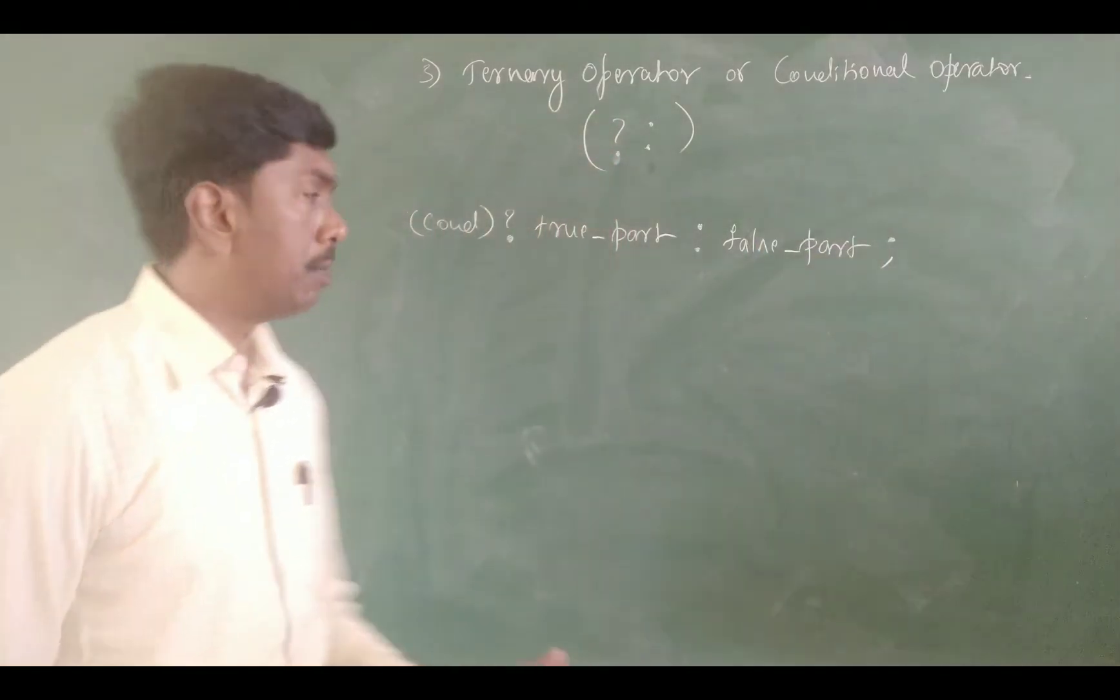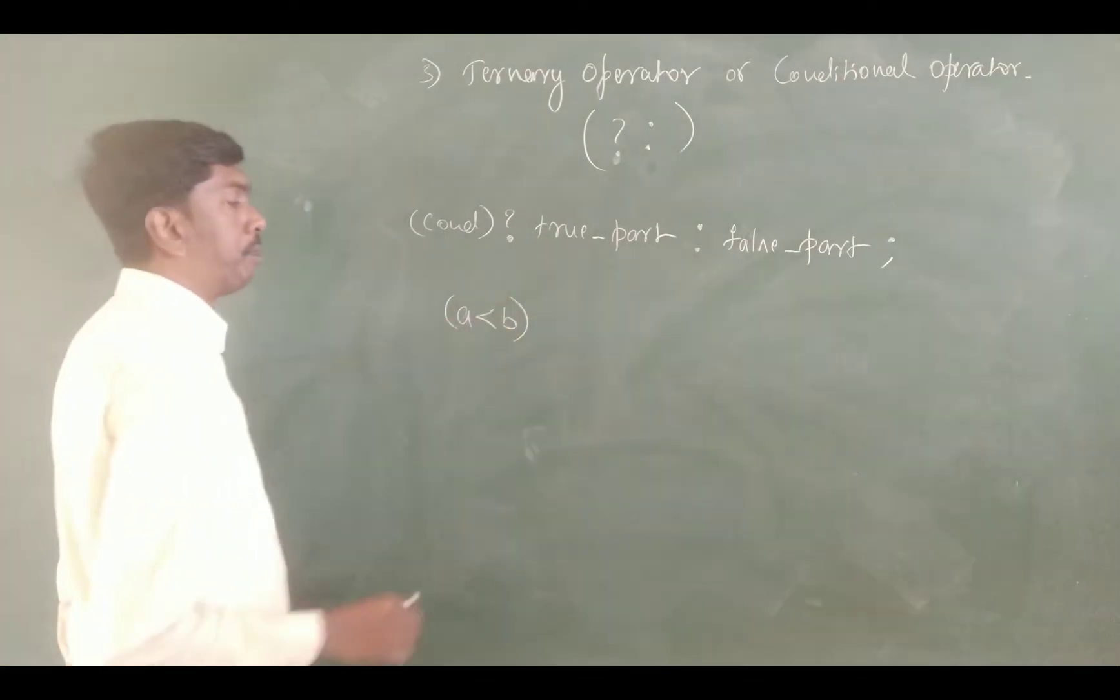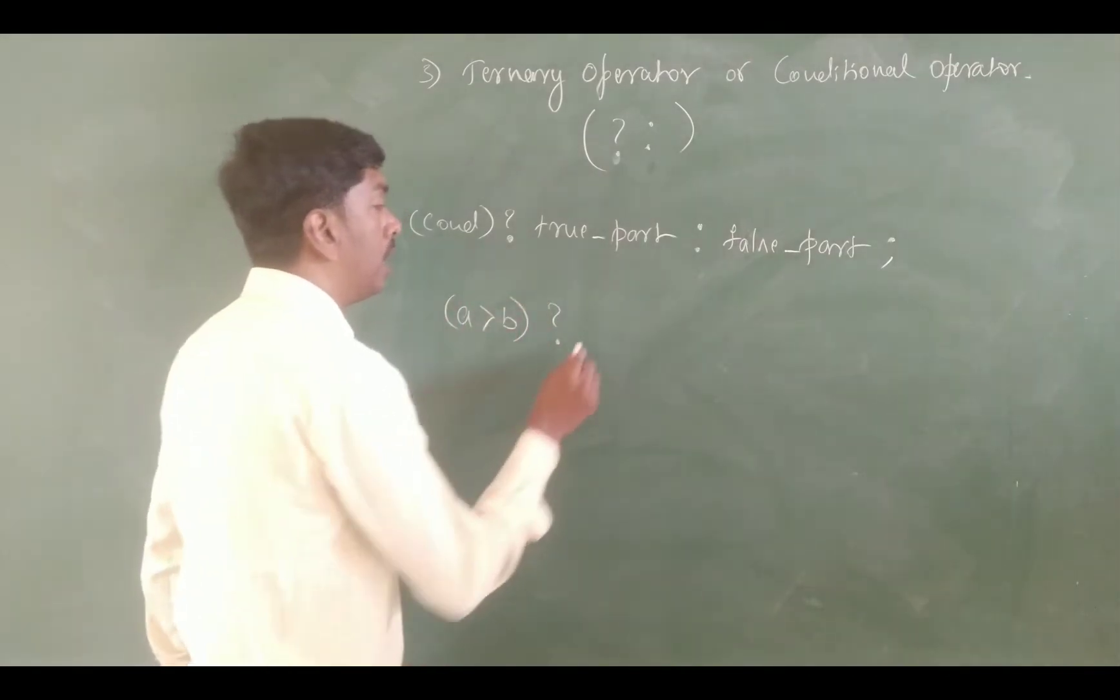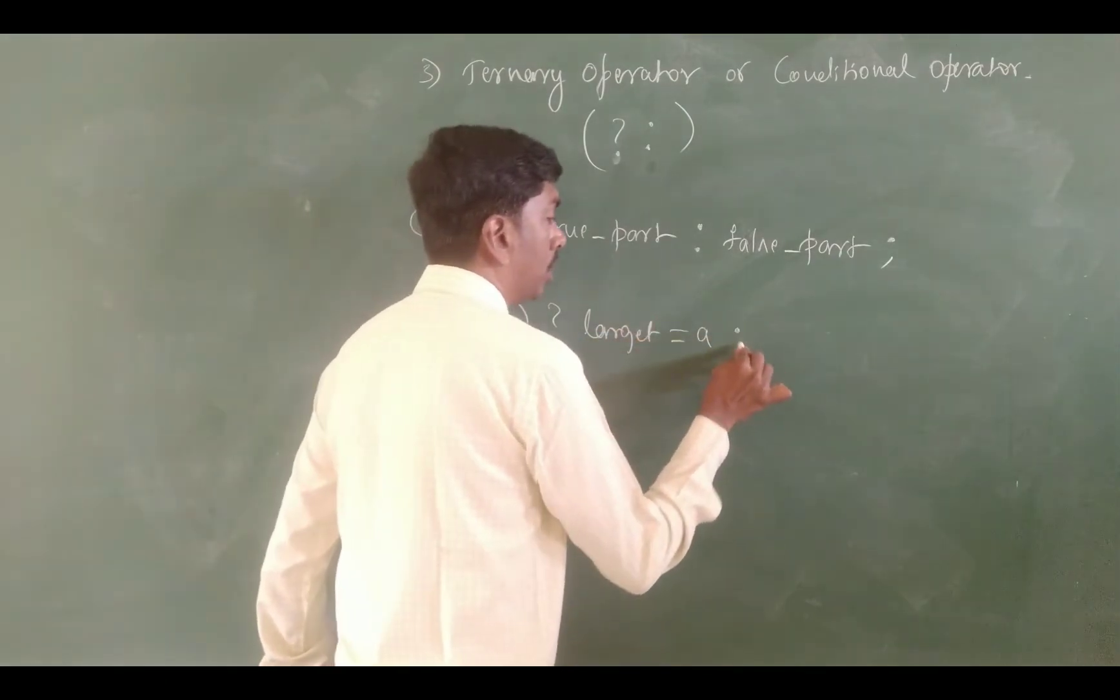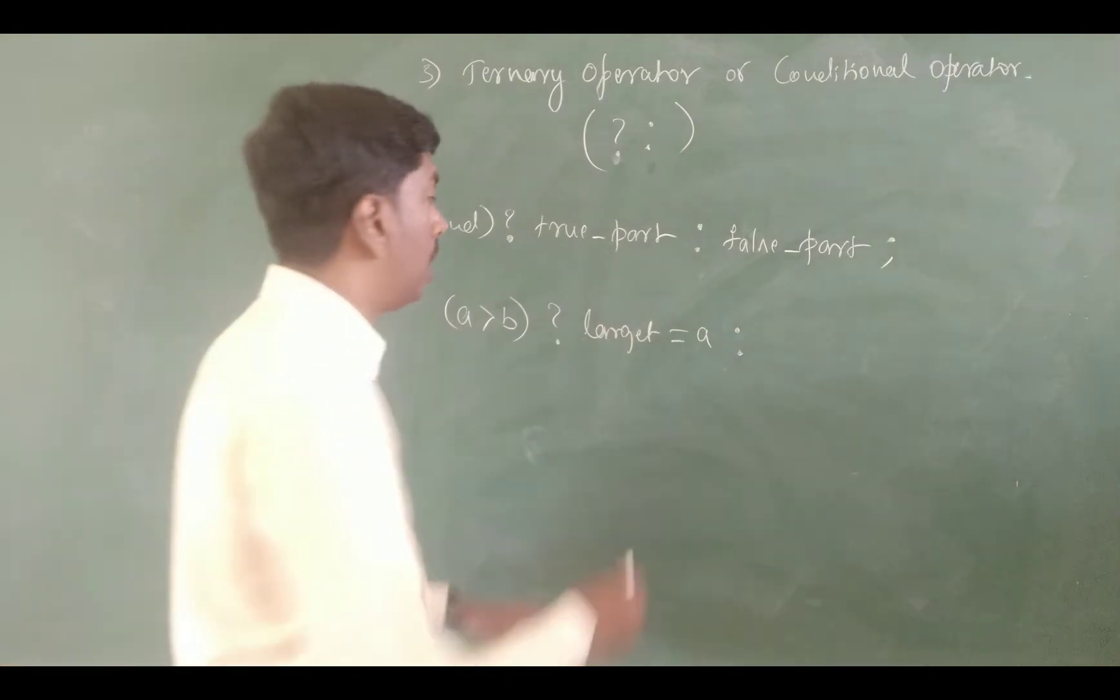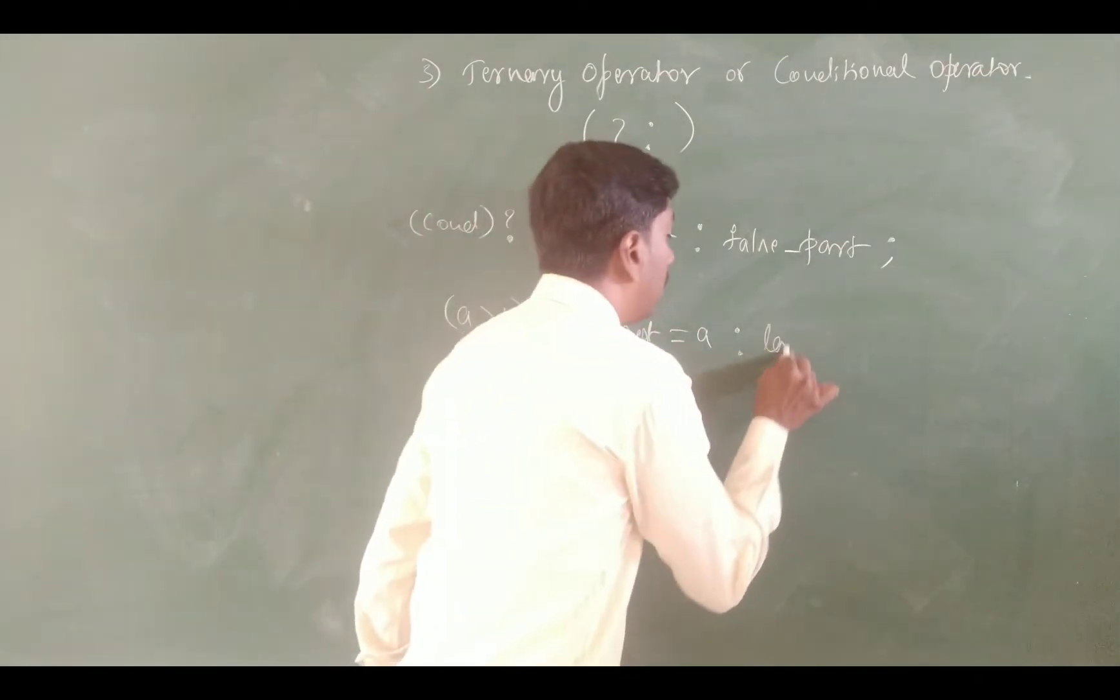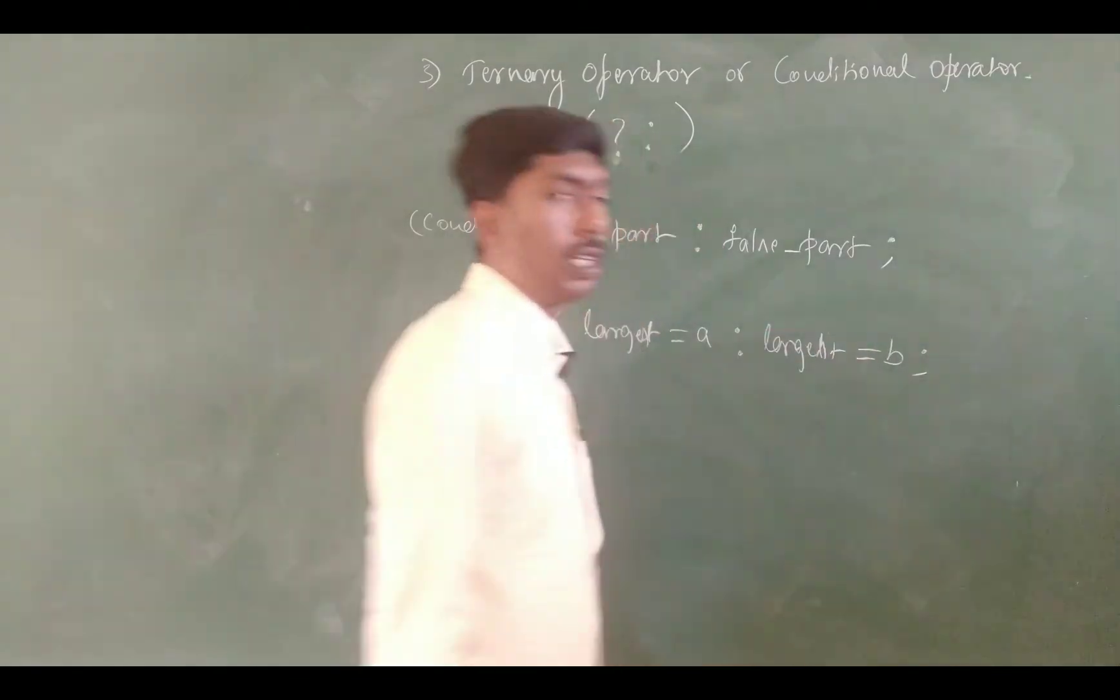For example, a is greater than b. Question mark and colon. If a is greater than b, largest equals a. By chance condition false, largest equals b.